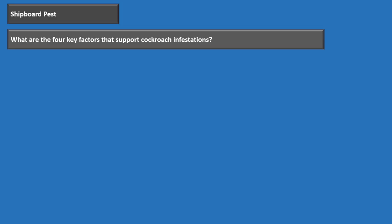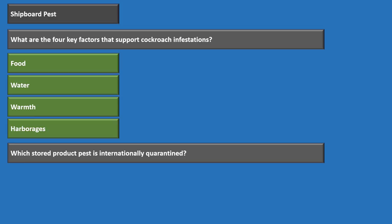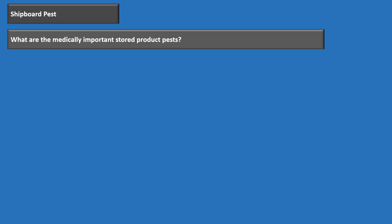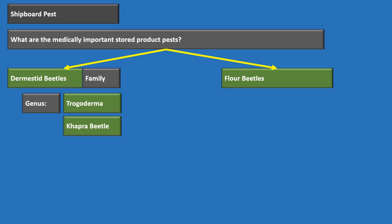The internationally quarantined stored product pest is the Khapra beetle. Medically important stored product pests include domestic beetles and flour beetles. Domestic beetles include Trogoderma and the Khapra beetle. Zero tolerance — if even one is found living or dead, adult or larva, the entire lot is rejected.